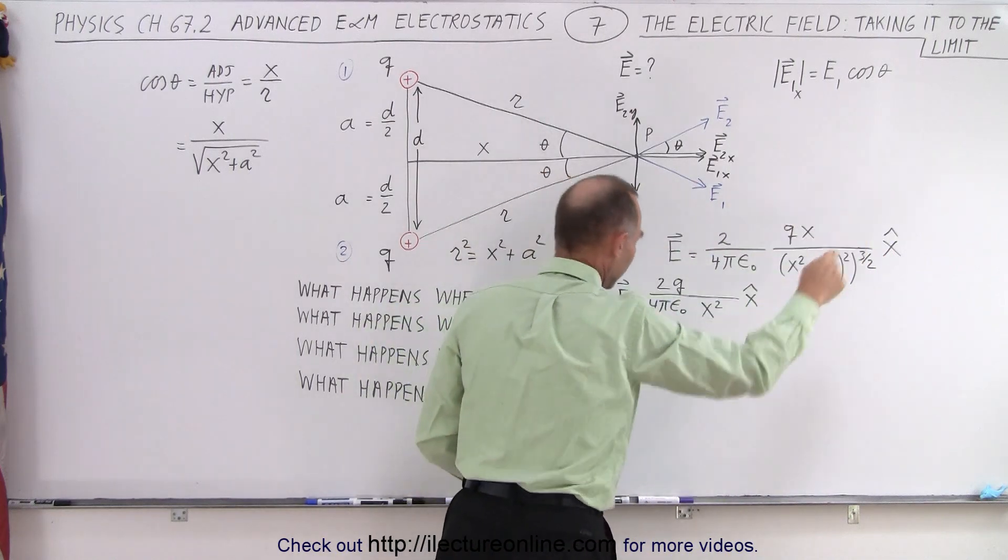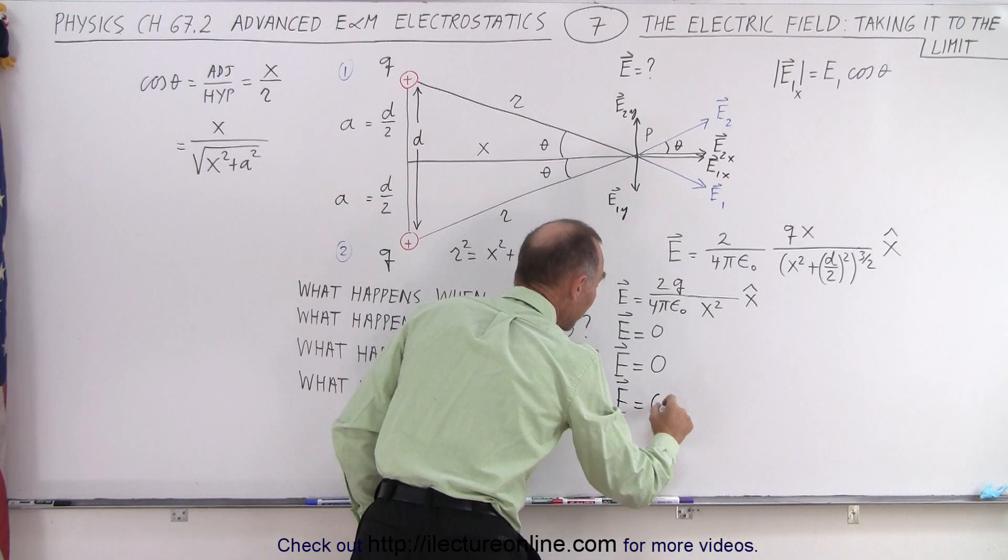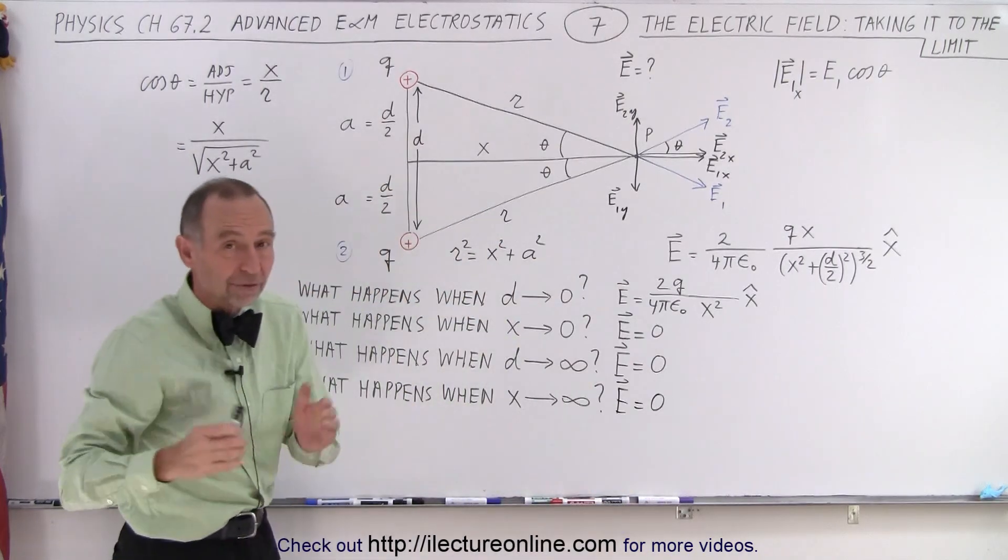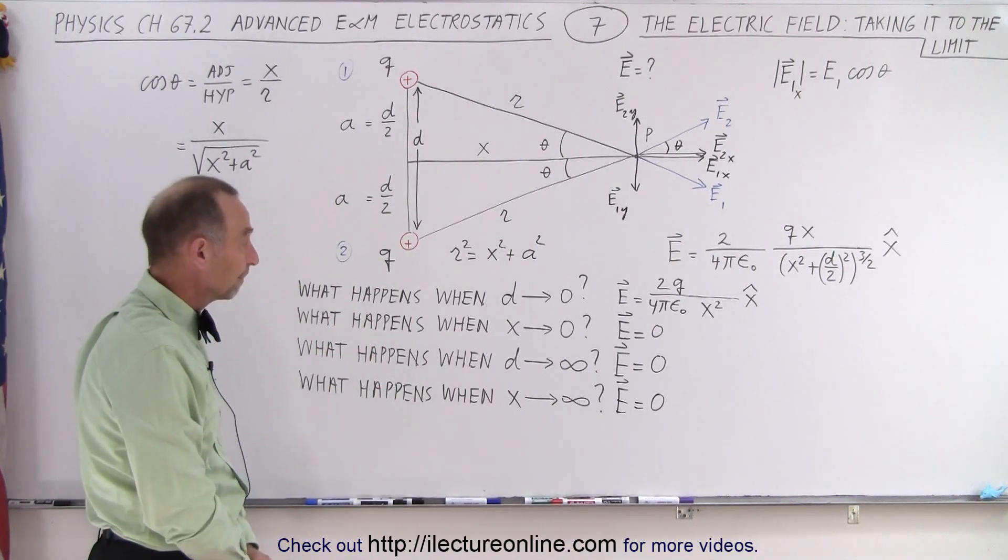So we can see that when x goes to infinity, electric field goes to 0 as well. And that makes sense because when you're infinitely far away from a point charge, you're so far away that essentially the electric field should go to 0.